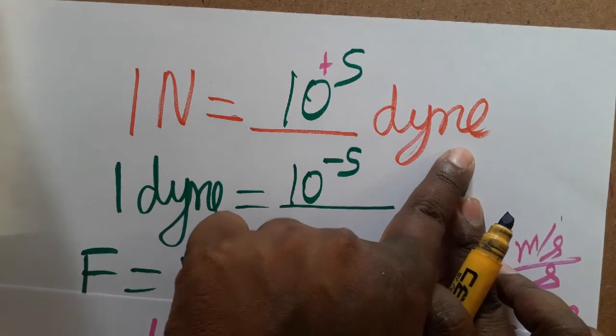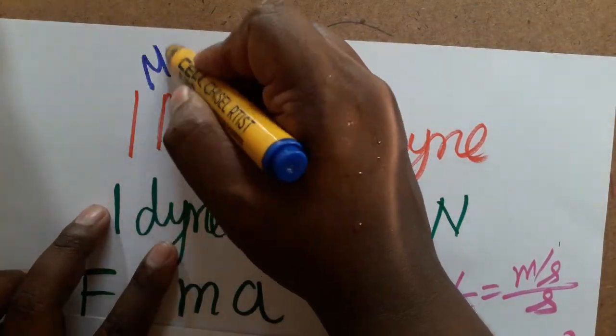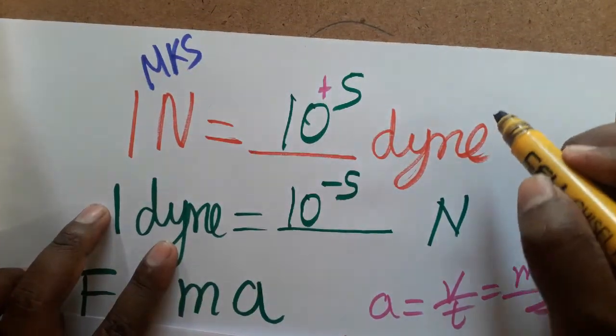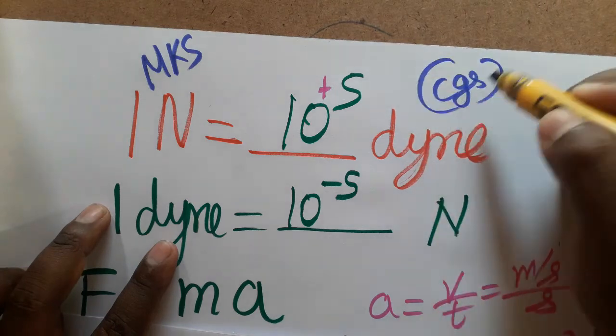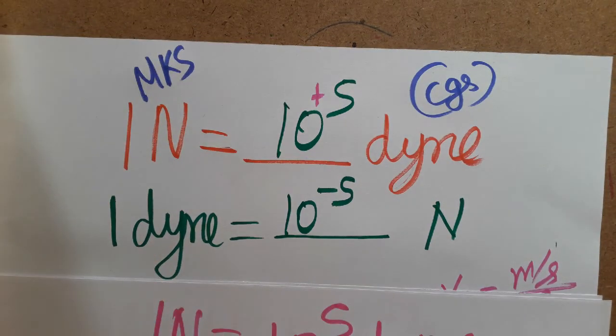To summarize: 1 newton = 10⁵ dyne, and 1 dyne = 10⁻⁵ newton. Newton follows the MKS system (meter, kilogram, second), and dyne follows the CGS system (centimeter, gram, second). Thank you — if you like my channel, please subscribe.